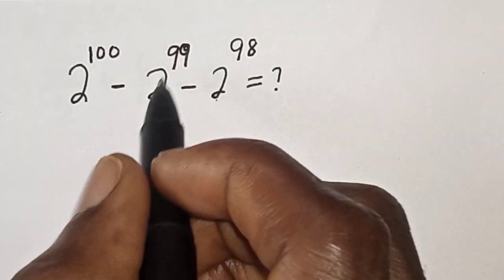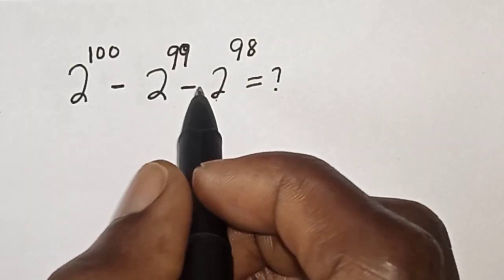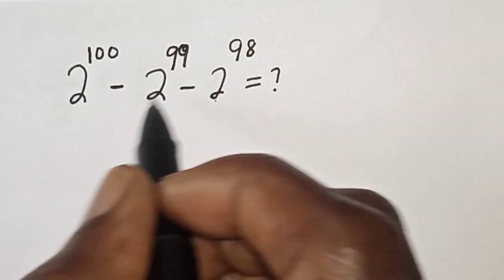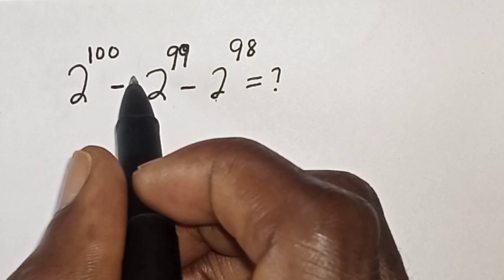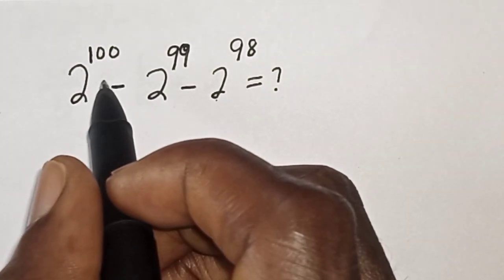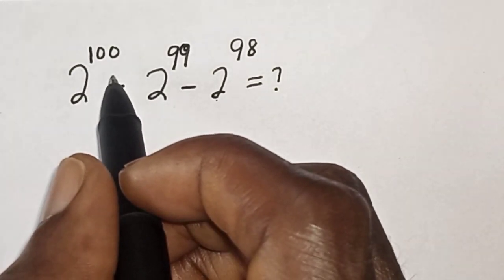2 raised to power 100 minus 2 raised to power 99 minus 2 raised to power 98 is equal to what? Hi everyone, welcome to my class. In this class we want to simplify this nice math problem.